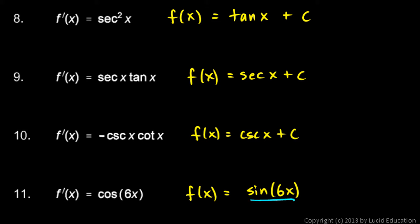So if we take the derivative of this, we get cosine 6x times 6. There's this extra factor of 6 which we don't want because that doesn't show up in our original function. So to get rid of that, we simply divide by 6.